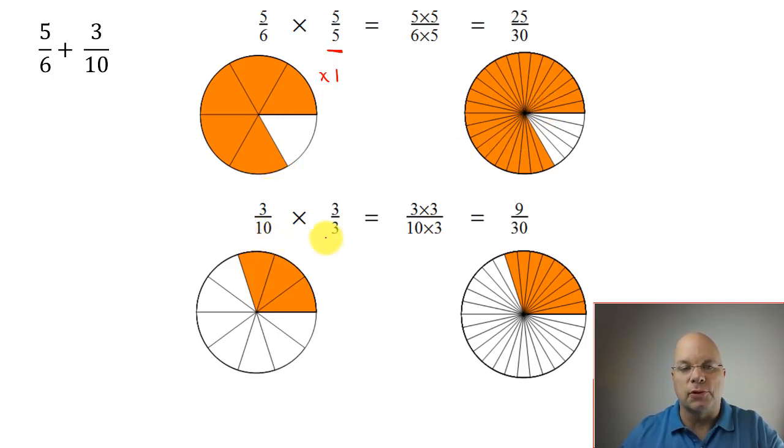We did the same thing with the 3 tenths. We multiply by 3 thirds, which is also another form of 1, to get 9 thirtieths. So now we have, if we rewrite these as their equivalent fractions, 25 thirtieths plus 9 thirtieths, now we have like terms. Now we're counting thirtieths in each of these terms. We can combine the 25 thirtieths with the 9 thirtieths to get 34 thirtieths. You can see it here on the picture.